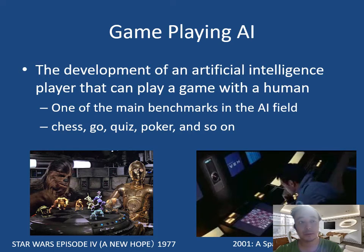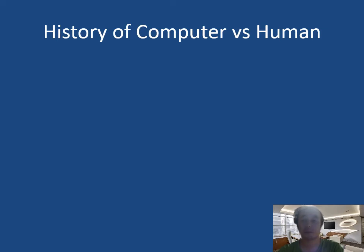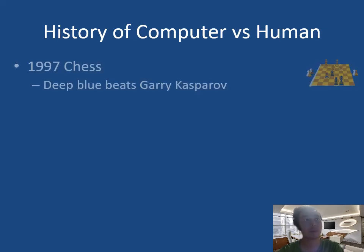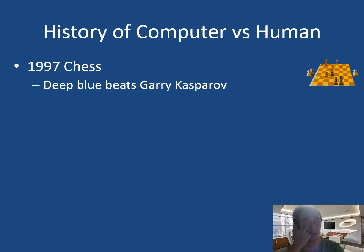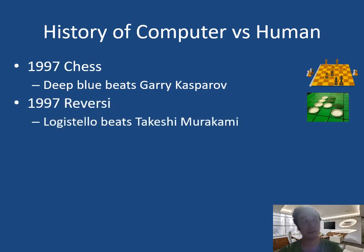There are several examples from movies like Star Wars and 2001: A Space Odyssey. The famous example is the chess competition, where IBM Deep Blue beats Gary Kasparov, the chess world champion, in 1997. And in the same era, not as famous, but in Reversi, the program Logistello beats Takeshi Murakami, who is a world champion of Reversi.